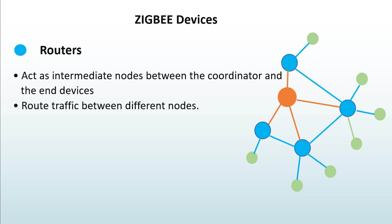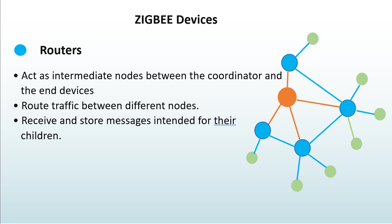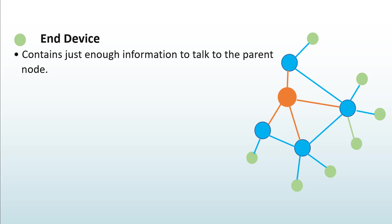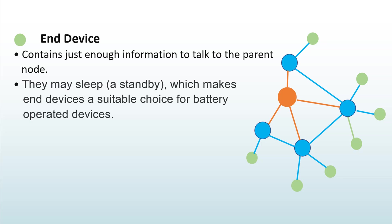Routers act as intermediate nodes between the coordinator and end devices. They are responsible for routing traffic between different nodes and also receive and store messages intended for their children — the end devices. Routers can also allow other end devices to join the network. End devices contain just enough information to talk to their parent node, which can be a coordinator or a router, and they may sleep, making them suitable for battery-operated devices.